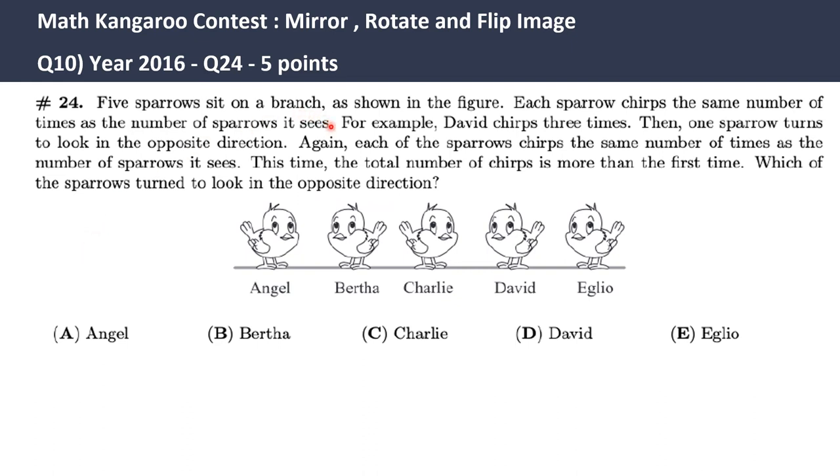This is a five-pointer question and you can see it's almost like a paragraph. There are far too many sentences and far too many conditions on how the sparrow turned, what happens when they turn, and how the counting is done. It is important to read the question properly and make notes of what you understand so that you can apply it in finding the right answer.